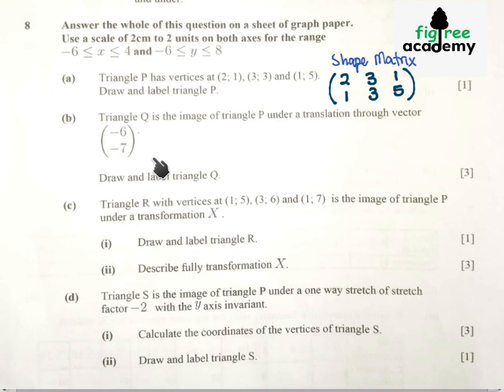Then we draw and label. Then on part B, triangle Q is the image of triangle P under a translation through vector (-6, -7). So we just take our matrix, or we can deal with coordinates if you are comfortable. We are going to take our translation matrix so minus 6 on top, then minus 7 on the bottom.